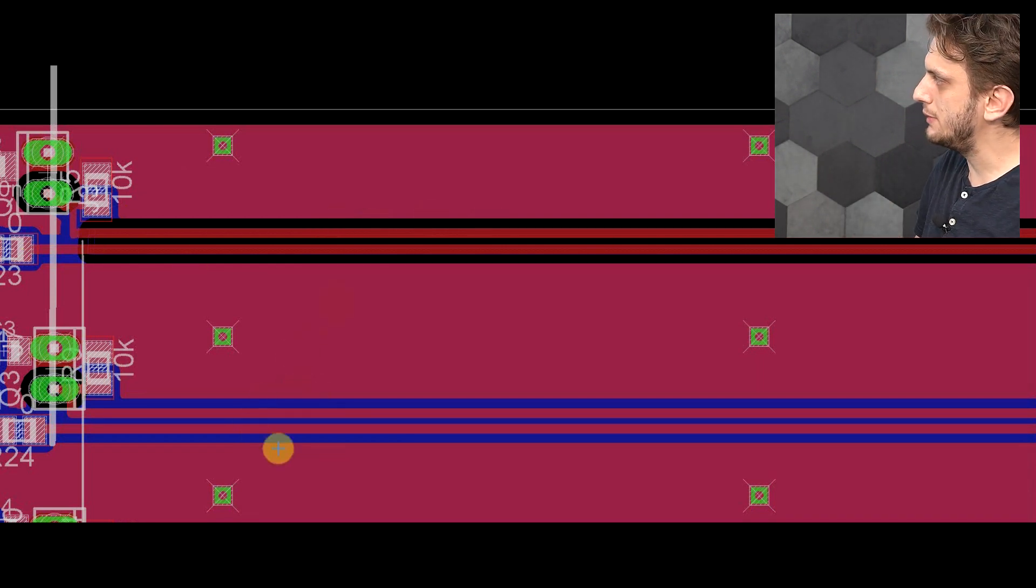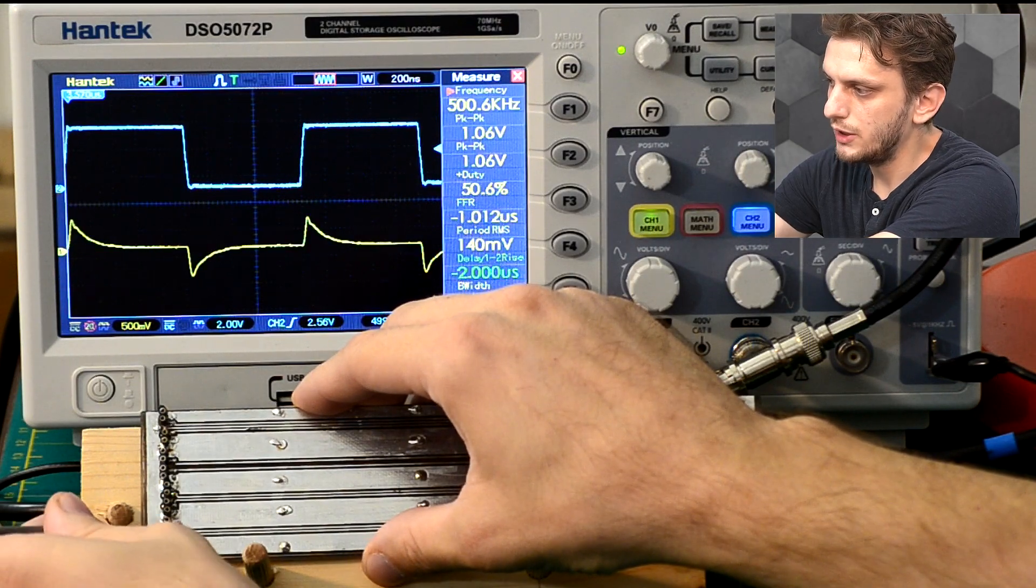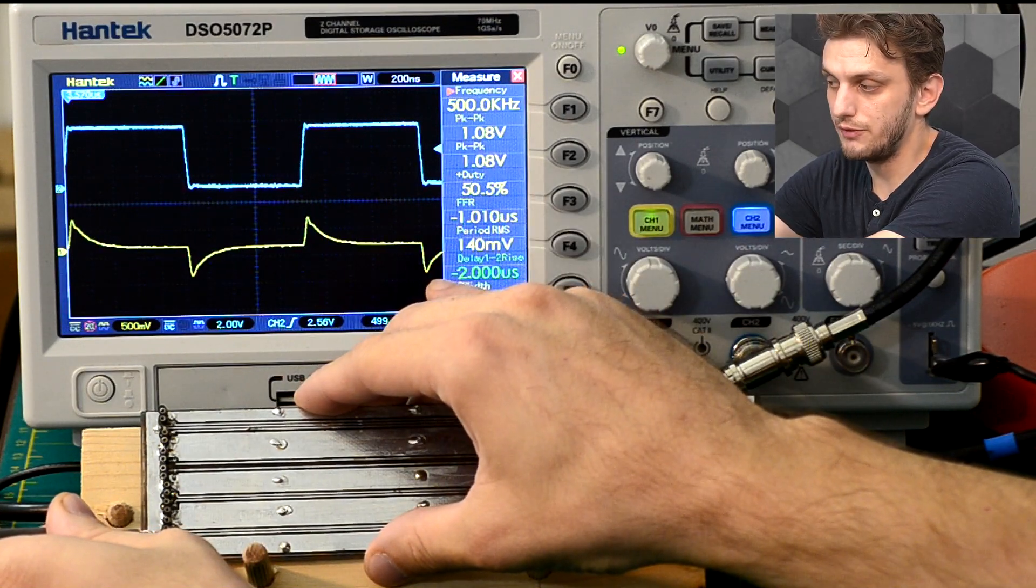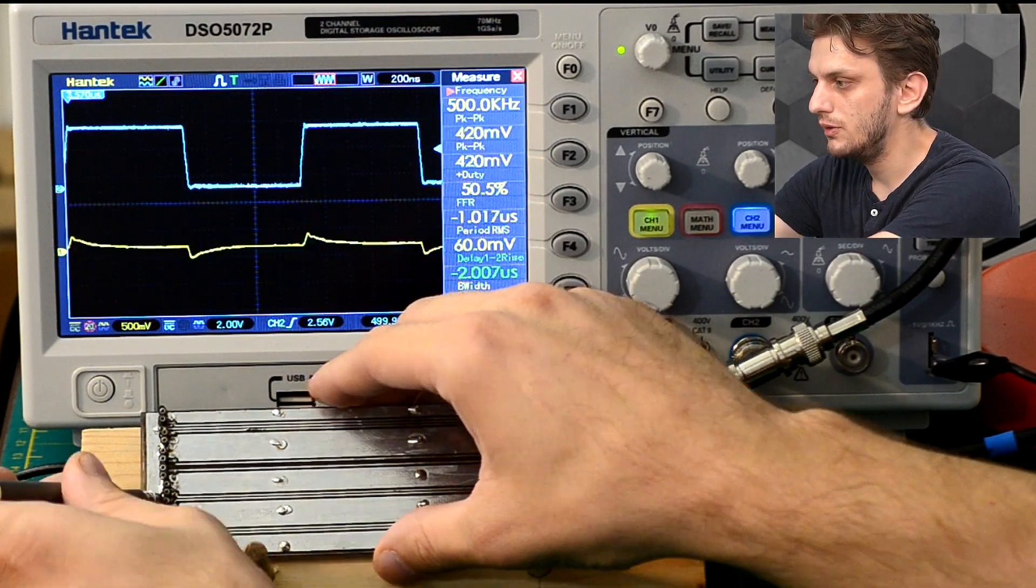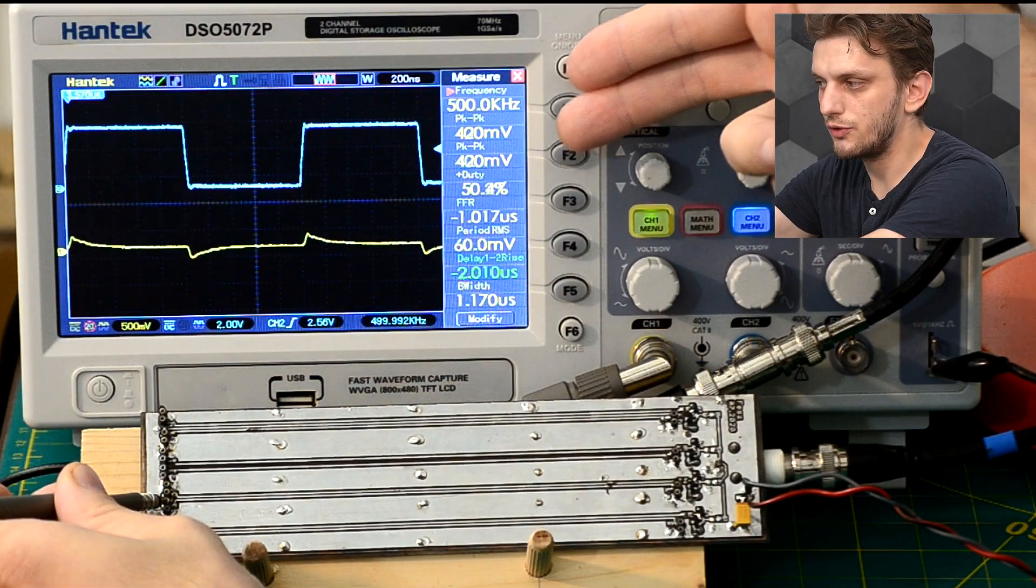Now for my second pair of lines, the length is exactly the same, the distance between the traces is exactly the same, but there is the ground plane beneath it. And basically we can go from the 1.1 volts that we have without a ground plane to just over 400 millivolts.